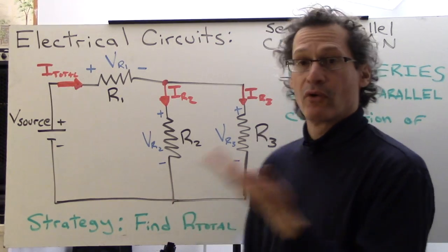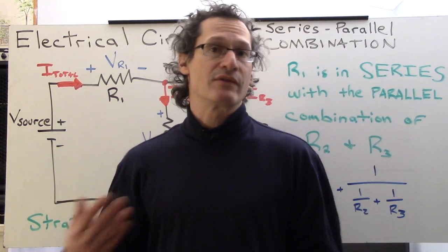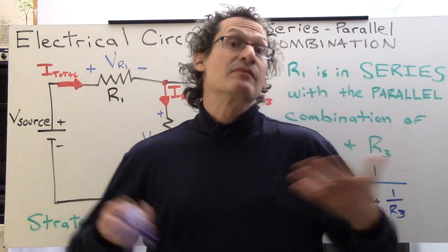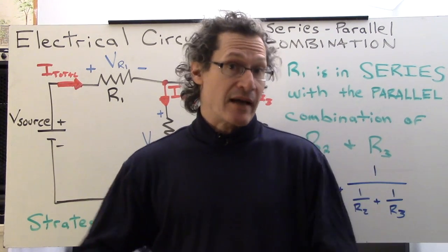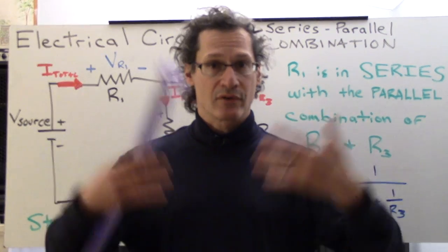So once you find R total, what do we do next? Well, let's look at some of the properties of this circuit and we'll figure out what to do with R total so we can find some other key values of the circuit and kind of analyze its behavior, see how it compares to the pure parallel and pure series circuits.